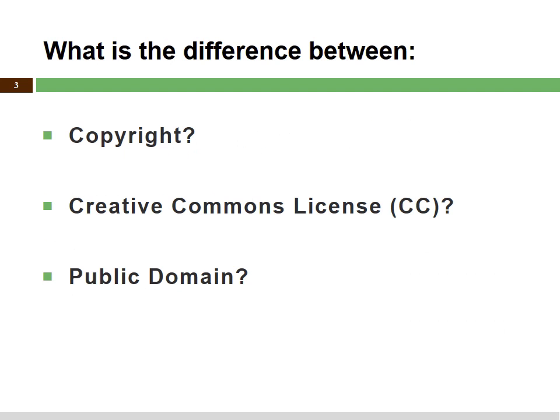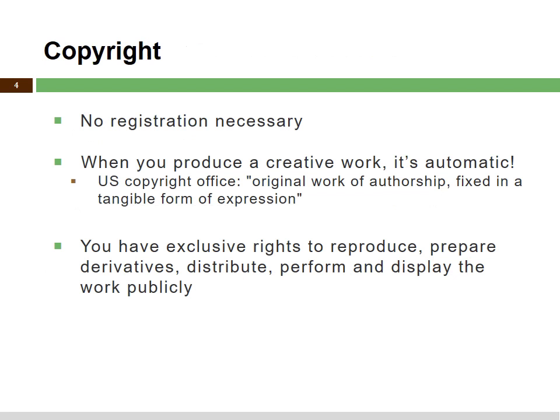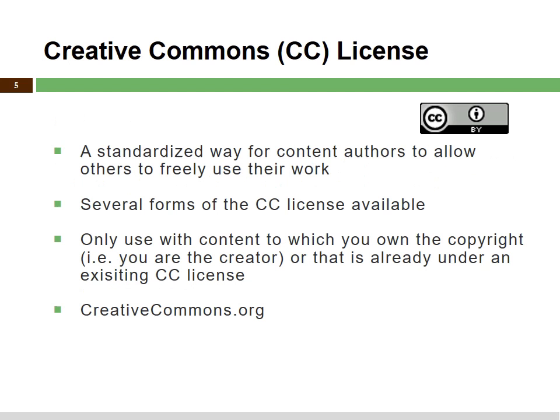What is the difference between copyright, a Creative Commons license, and the public domain? In copyright, there is no registration necessary. When you produce a creative work, it's automatic. The U.S. Copyright Office defines a creative work as an original work of authorship which is fixed in a tangible form of expression. In other words, you have exclusive rights to reproduce, prepare derivatives of your work, distribute it, perform it, or display it publicly in any way you see fit.